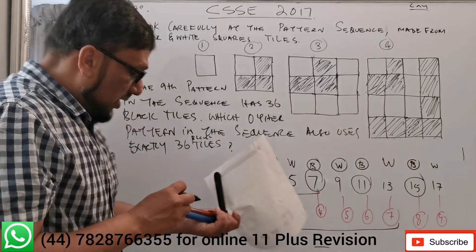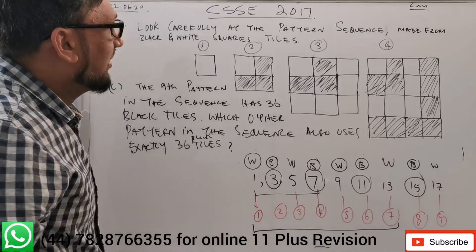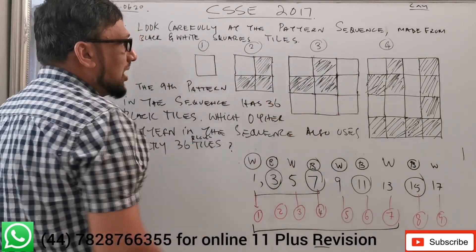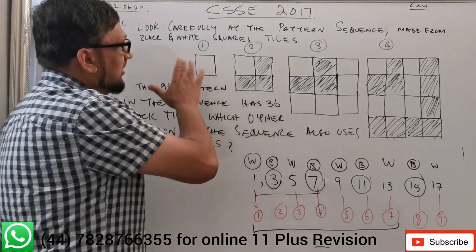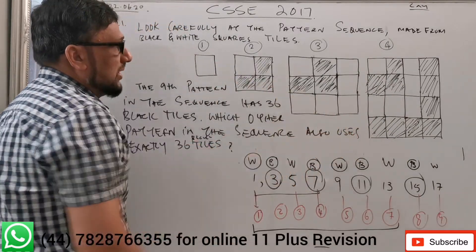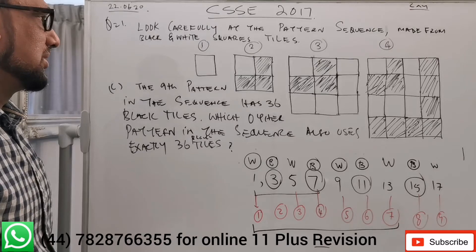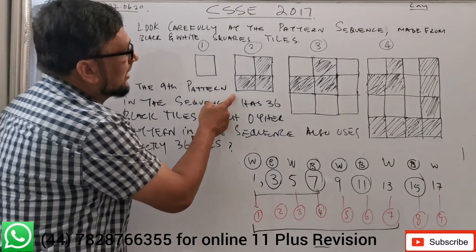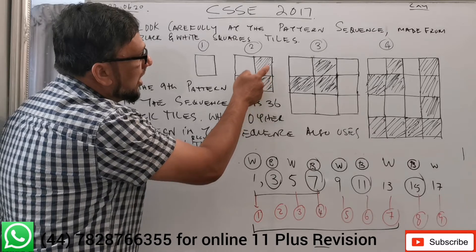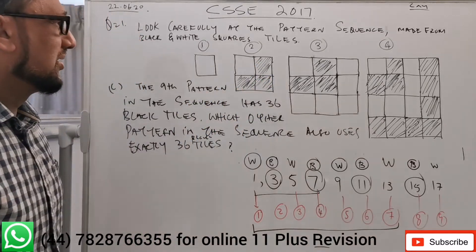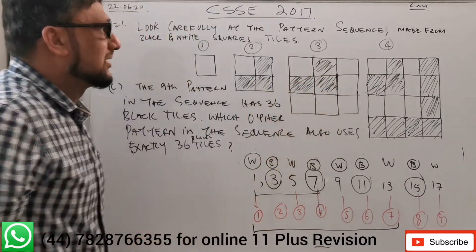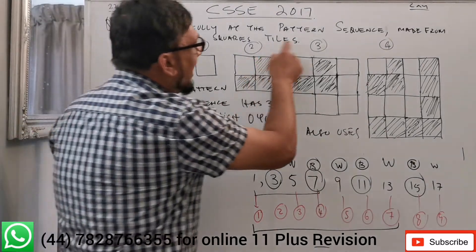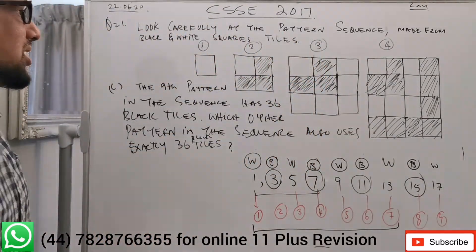We need to understand the pattern again. There are two tile types: white and black. Looking at the four given patterns — pattern two and pattern three, for example, could share the same black tile count. We need to find which pattern shares exactly 36 black tiles with pattern nine. Let me extend the sequence: 1 white, 3 black, 5 white, 7 black, 9 white, 11 black, 13 white, 15 black, 17 white — increasing by two each time, alternating white and black.